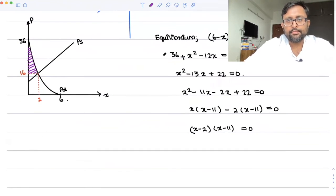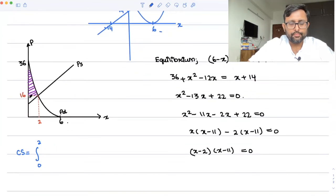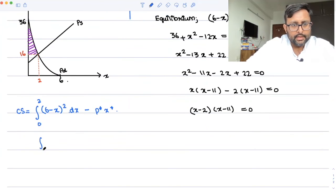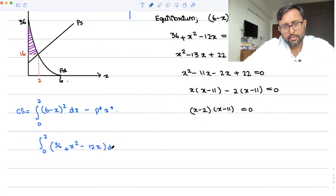So consumer surplus is given by integral 0 to 2, that is 0 to q star, that's what we have written out here. 0 to q star, so it is 0 to 2. 6 minus x square dx minus p star x star. So the idea is I'll take just one step which is 36 plus x square minus 12x dx minus 16 into 2.